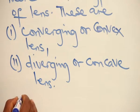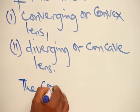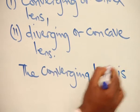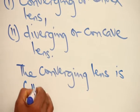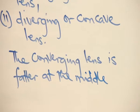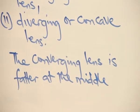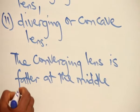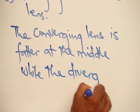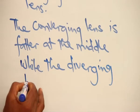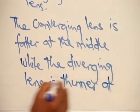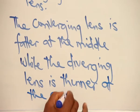The converging lens is fatter at the middle, while the diverging lens is thinner at the center or the middle.